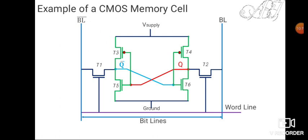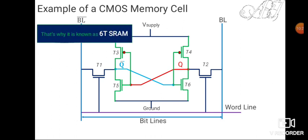Looking at the circuit, we count the transistors: T1, T2, T3, T4, T5, T6 — six transistors in total. This is why this configuration is known as 6T SRAM. Using six transistors per cell means it requires more space on chip.